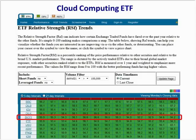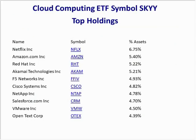The first example is the cloud computing ETF, symbol SKYY. This holds cloud computing stocks and has a current relative strength of 95.9 — higher than 90%. The components of the cloud computing ETF include Netflix, Amazon, Red Hat, Akamai, F5 Networks, Cisco, NetApp, Salesforce, and VMware. Of all the sectors in the market right now, this is probably the strongest sector in terms of underlying stocks growing their earnings quickly. The cloud computing sector is a way to participate by buying ETF symbol SKYY.